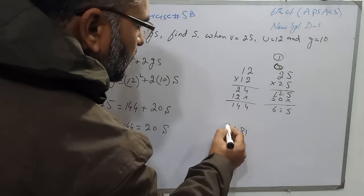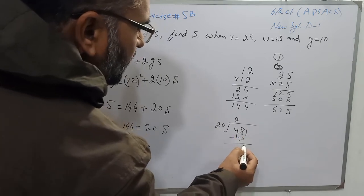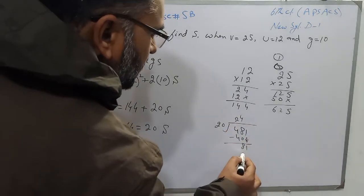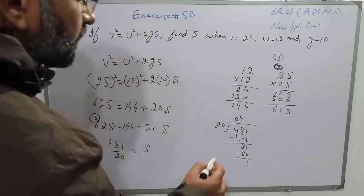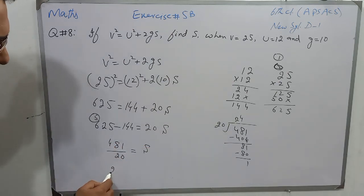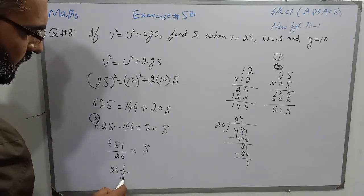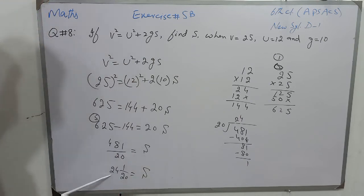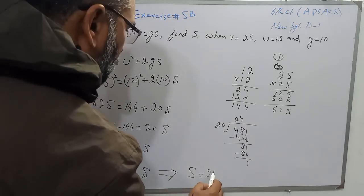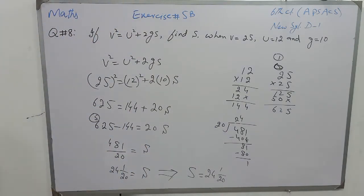Subtract 144 from 625: subtract 4 from 5 gives 1; 4 cannot be subtracted from 2 so take carry from 6 — it becomes 12, subtract 4 from 12 gives 8, and 6 becomes 5; subtract 1 from 5 gives 4. So we have 481. Since 20 is multiplying s, when we transfer it to the other side it will divide: 481 over 20 equals s. Divide 481 by 20: 2 twenties are 40, subtract from 48 gives 8, bring down 1 giving 81; 4 twenties are 80, subtract from 81 gives remainder 1. So s is equal to 24 whole number 1 over 20.